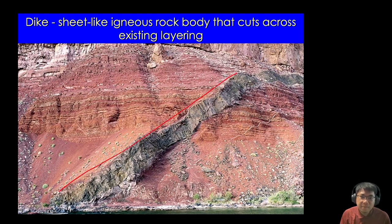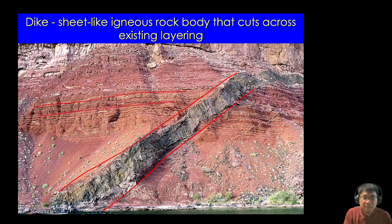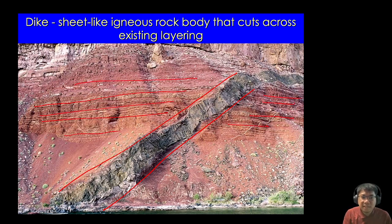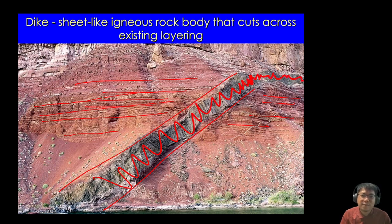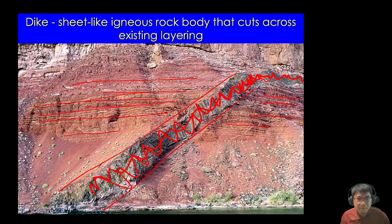This is an example of a dike. A dike is a body of igneous rock that cuts across existing layering of sedimentary rocks. As you can see here, these are different layers of sedimentary rocks, and these horizontal layers are cut by this dike. This is an example of a dike.